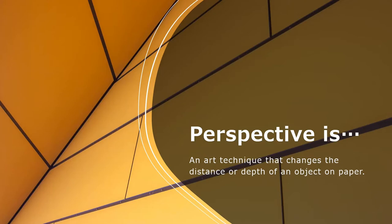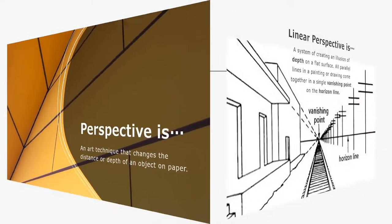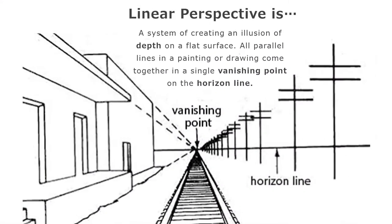More specifically today we are talking about linear perspective. Linear perspective is a system of creating an illusion of depth on a flat surface. All the lines in a painting or drawing come together in a single point called a vanishing point on the horizon line.